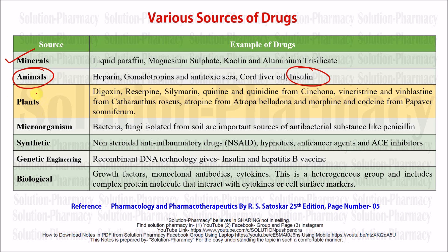Next is the plant source, one of the most important sources of drug. Under plant sources we obtain digoxin, a cardiac glycoside used to prevent congestive heart failure. Reserpine is another important drug from plant sources. Silymarin is a very vital drug used as a liver tonic — in cases of liver cirrhosis or liver problems, silymarin from milk thistle is very important. Quinine and quinidine are obtained from cinchona bark — quinine is an anti-malarial drug.